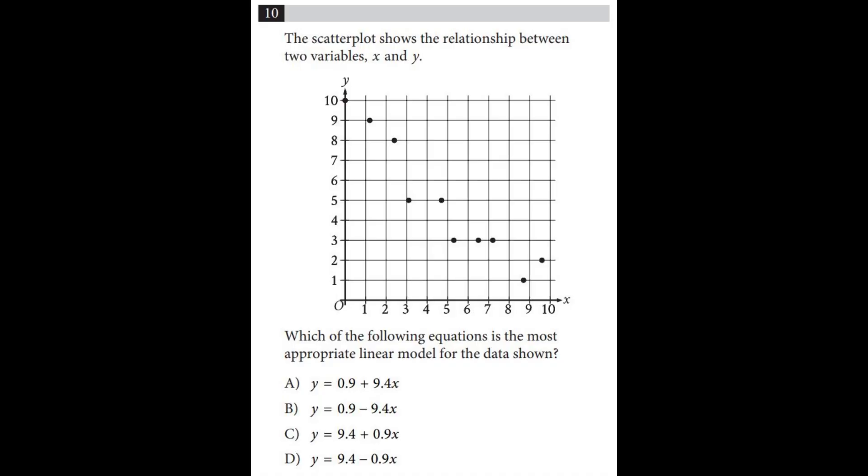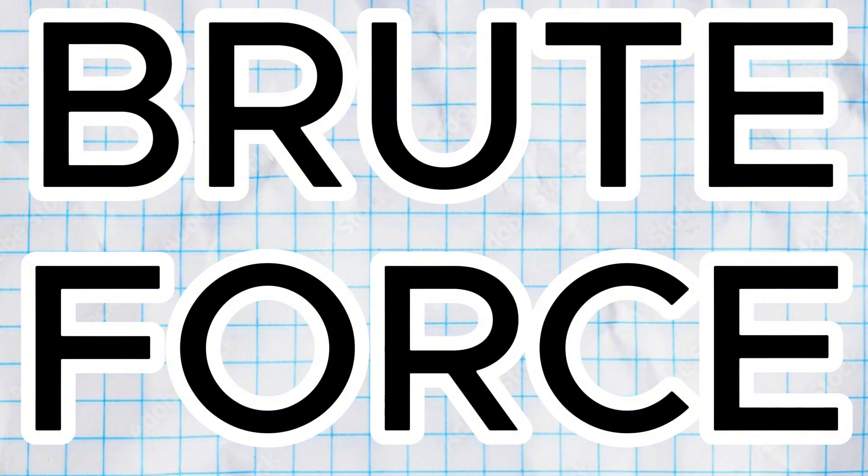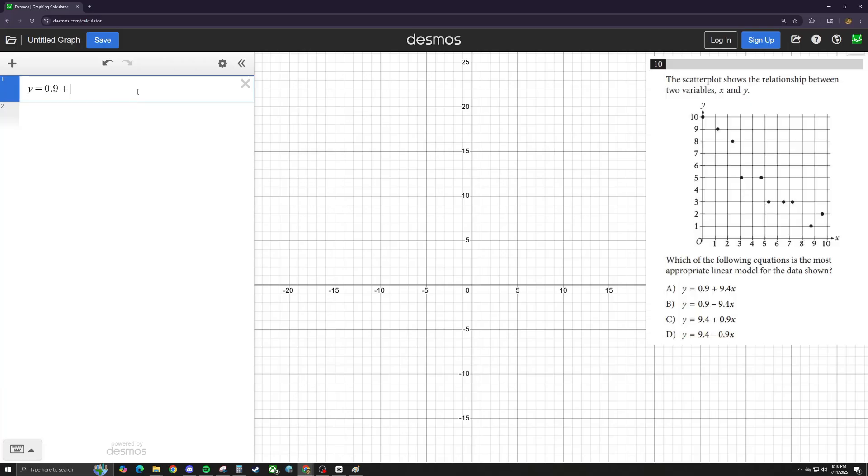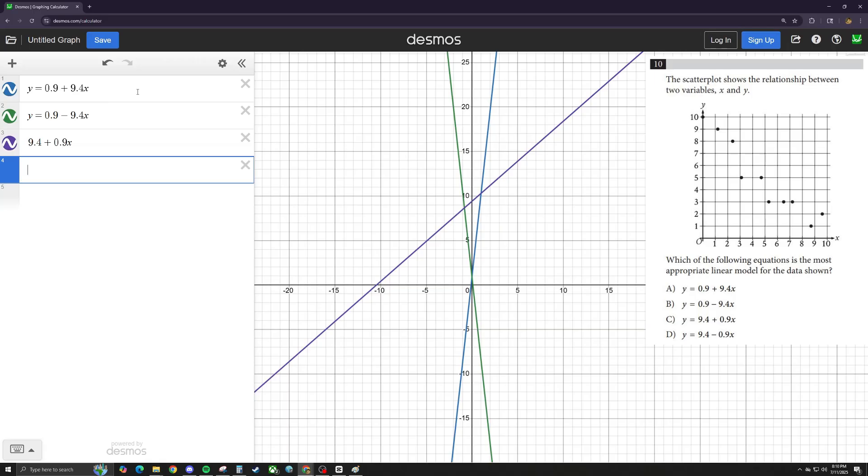Desmos can help you solve questions like these asking for a line of best fit by a method I like to call brute force, which just means you take every single answer choice and plug it into Desmos and see which one works out for you. So that would be D in this case, since it matches the points on the given scatter plot the best.